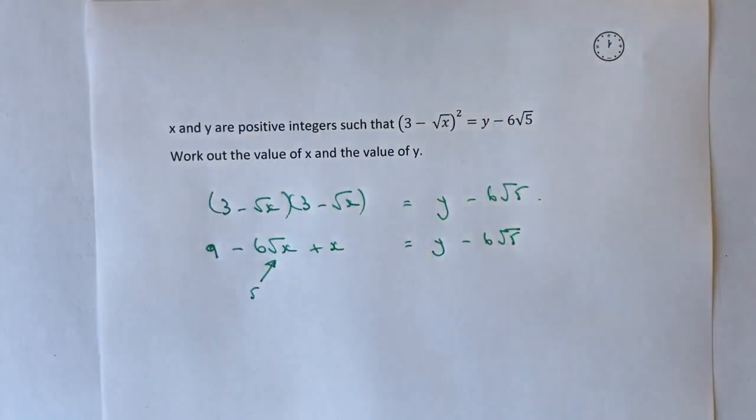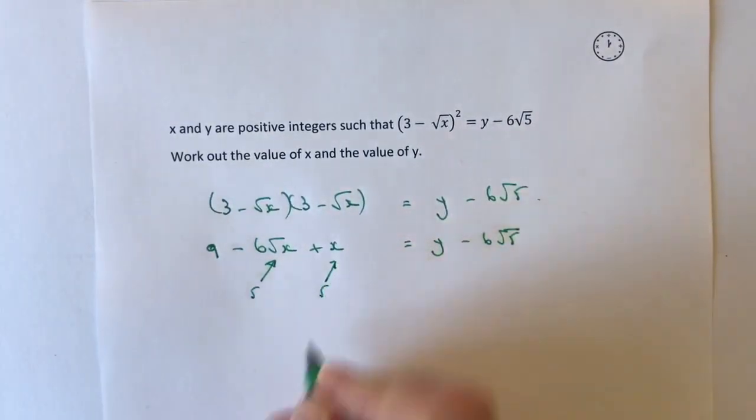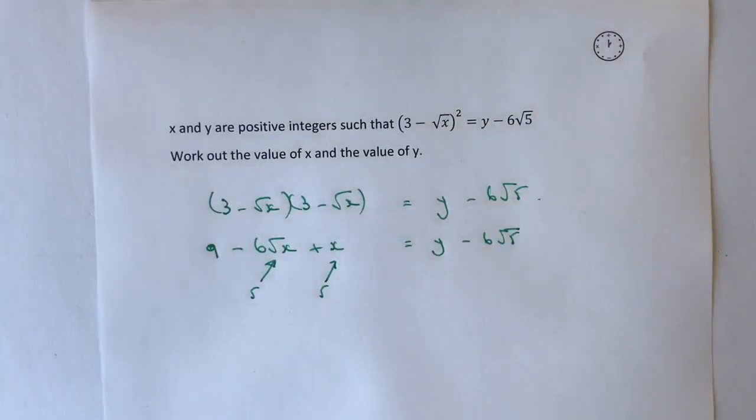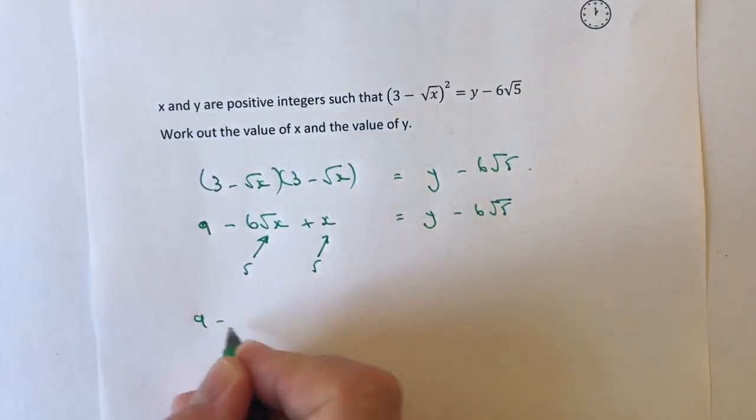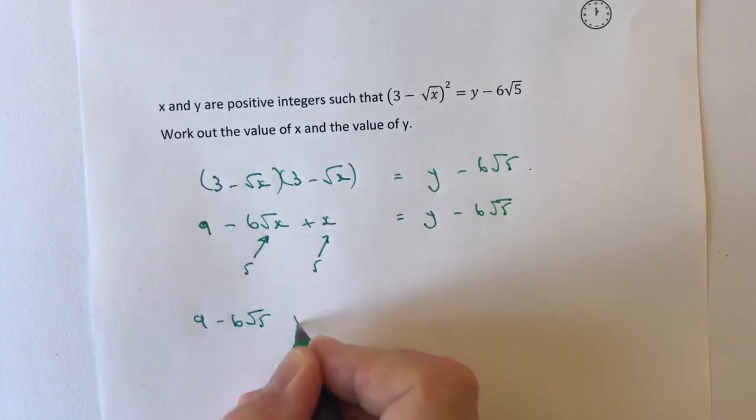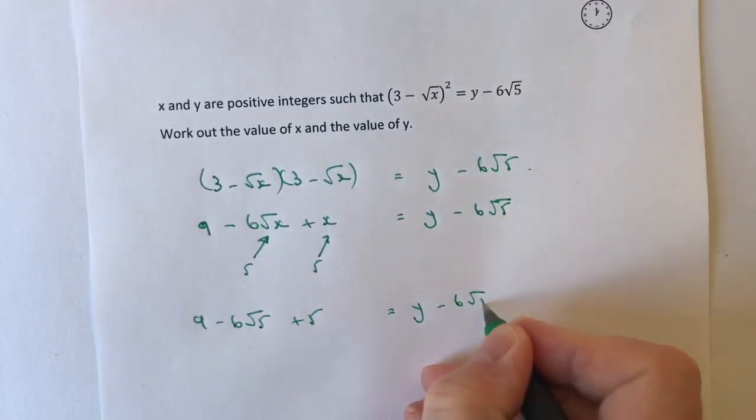Now if that is the case, it also means that the other value of x here is also 5. So what I can do is rewrite that now as being 9 - 6√5 + 5. And that equals y - 6√5.